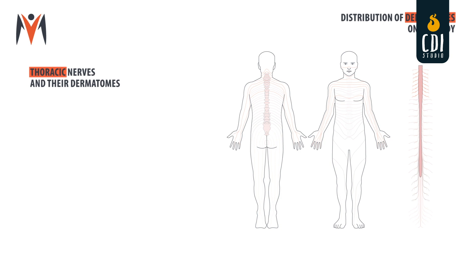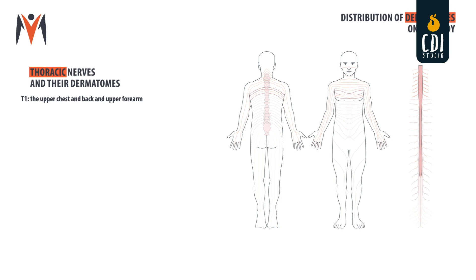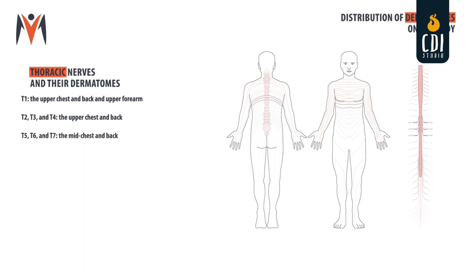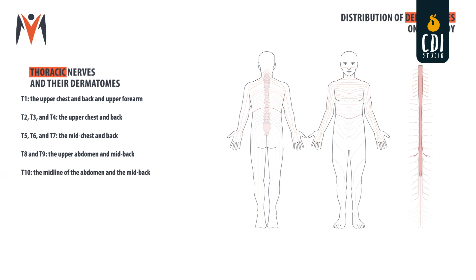Thoracic nerves and their dermatomes. T1: the upper chest and back and upper forearm. T2, T3, and T4: the upper chest and back. T5, T6, and T7: the mid chest and back. T8 and T9: the upper abdomen and mid back. T10: the midline of the abdomen and the mid back. T11 and T12: the lower abdomen and mid back.